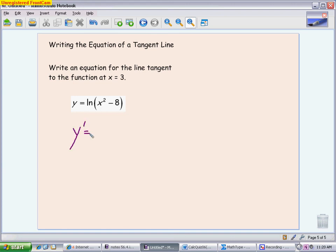When I derive this, it's a du over u. Notice it's no properties, nothing fancy here. So the derivative is 2x over x²-8. I'm going to use that to figure out my slope. My slope is going to be what I get when I take this 3 and plug it in for x. So when I put 3 in, I get 6 over 9-8, which is 6 over 1, which is 6. So I get my slope.